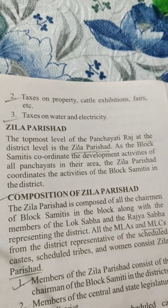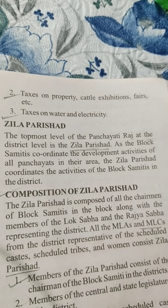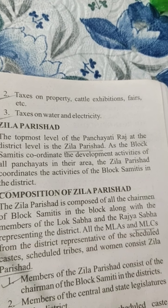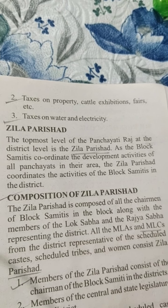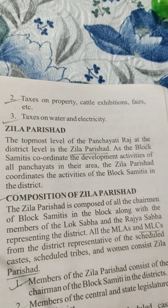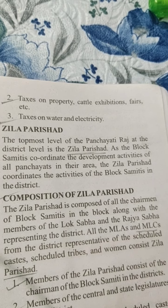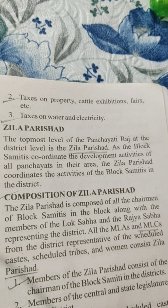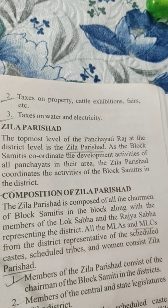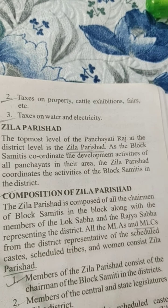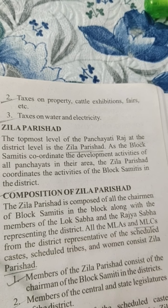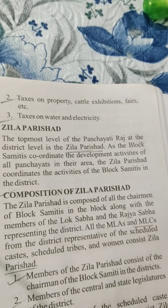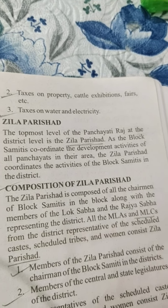What is Jilla Parishad? The topmost level of Panchayati Raj at the district level is the Jilla Parishad. Just as the Block Samiti coordinates the development activities of all Panchayats in their area, the Jilla Parishad coordinates the activities of the Block Samitis in the district.